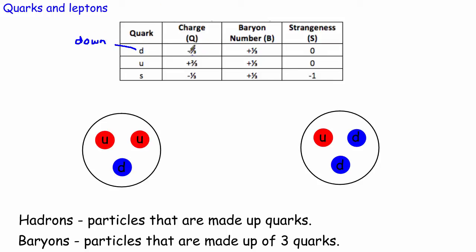In relative charges — that is, charges relative to the proton — the down quark has a charge of minus one third. The up quark has a charge of plus two thirds relative to that of a proton. Then there's the strange quark. So we have three types of quarks: down, up, and strange, with charges of minus one third, plus two thirds, and minus one third respectively.